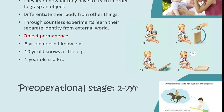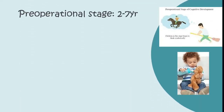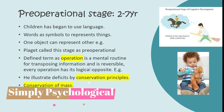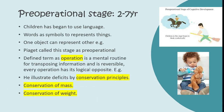Hello everyone and welcome back to Simply Psychological. Today we are going to discuss the second stage of cognitive development given by Jean Piaget, which is the pre-operational stage. By the age of one and a half to two years, a child begins to use language — words and symbols — to represent things or groups of things.